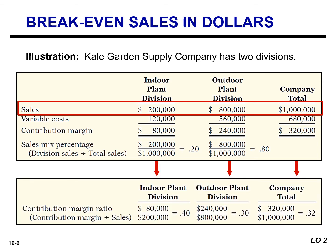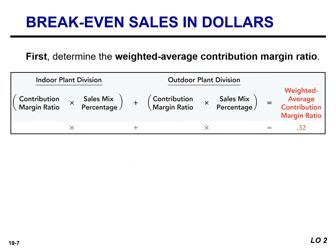We can also calculate the contribution margin ratio for each division. Taking the contribution margin for the indoor plant division of $80,000 and dividing by sales of $200,000 gives a contribution margin ratio of 40%. A similar calculation for outdoor plants gives a 30% contribution margin ratio. The combined company contribution margin ratio is 32%, calculated by dividing total contribution margin by total sales — this is a weighted average of the two divisions' individual ratios.